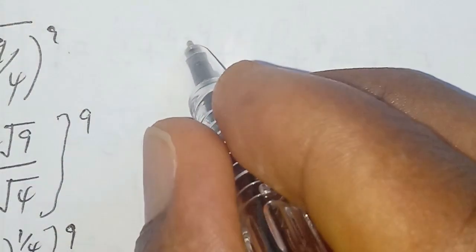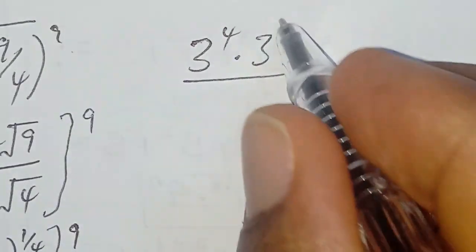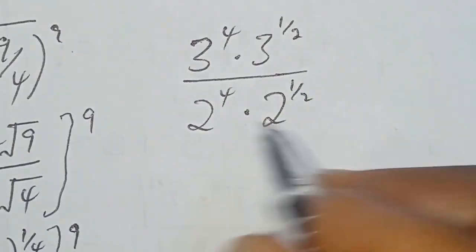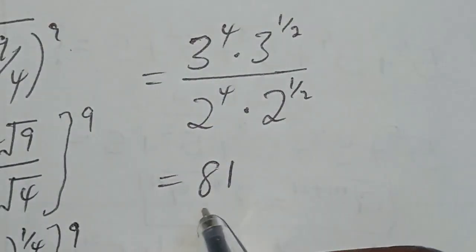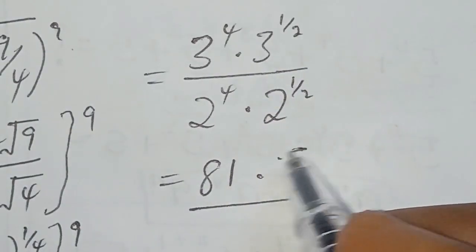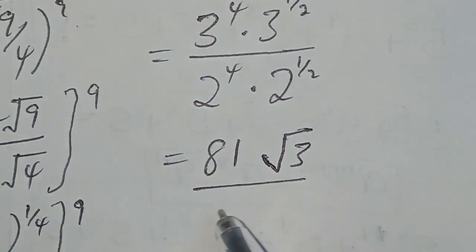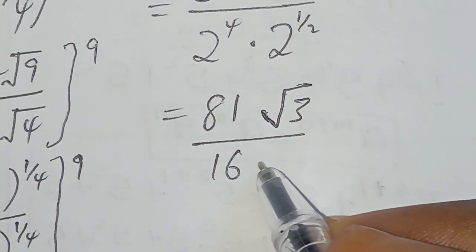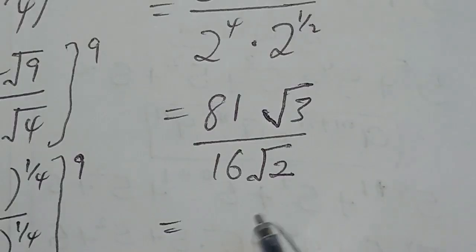We get 3 to the power of 4, and we can write this as (9/4) to the power of one half, over 2 to the power of 4, multiplied by 2 to the power of one half. That gives us 3 to the power of 4 equals 81, multiplied by the square root of 3. For the denominator, 2 to the power of 4 equals 16, with the square root of 2.